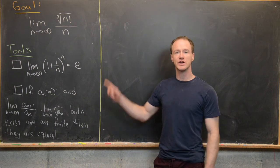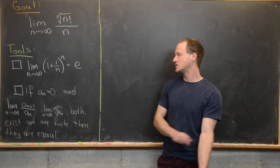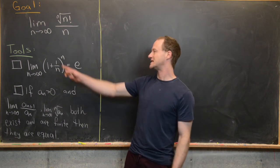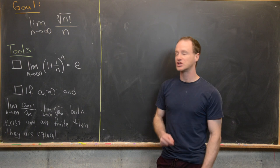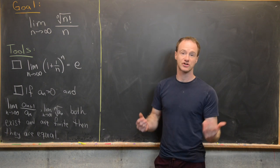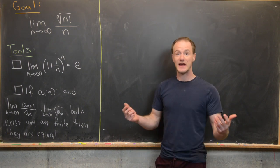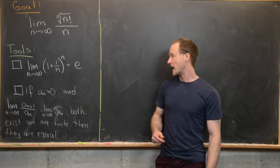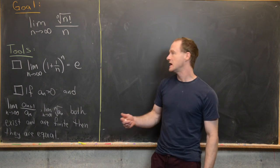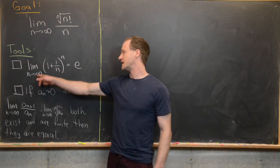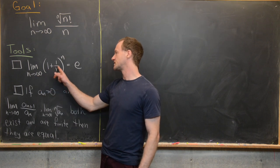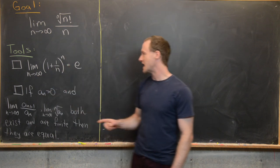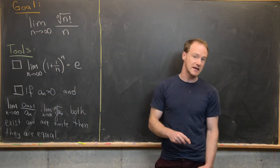We're going to use two main tools. The first is a standard limit representation of the natural base e, specifically the limit as n goes to infinity of one plus one over n, all to the n, equals e.